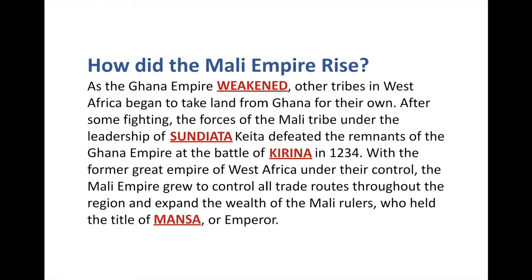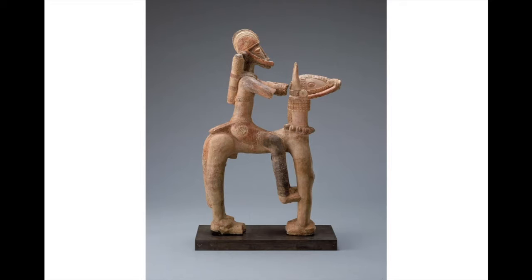Before we go on, let's talk about the militaries of West Africa. We have a couple of sculptures of African soldiers from this time. This is a cavalryman — a guy riding a horse — and one thing you can notice is that the soldier isn't wearing a lot of clothes. Armor wasn't really important mainly because it was really hot in the savannah, the Sahel, and even desert areas, so it was more important to stay cool than to wear bulky armor like European knights.